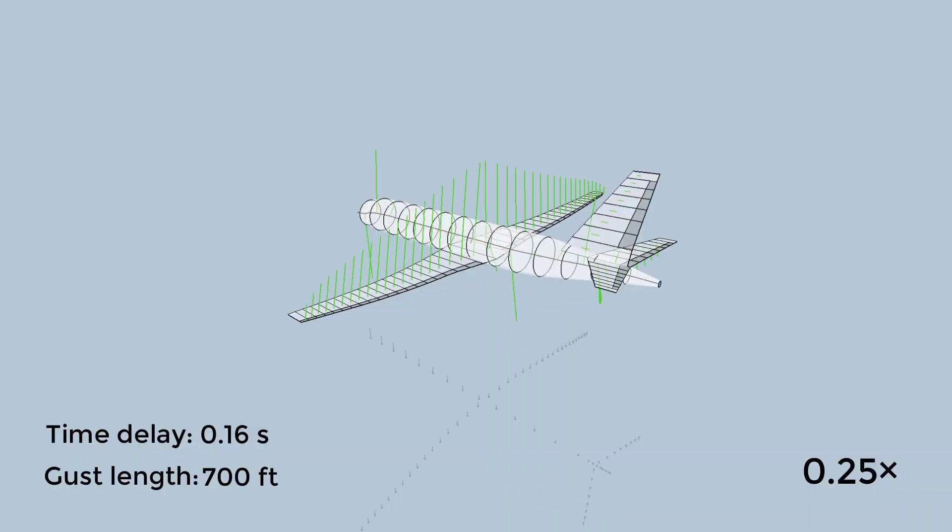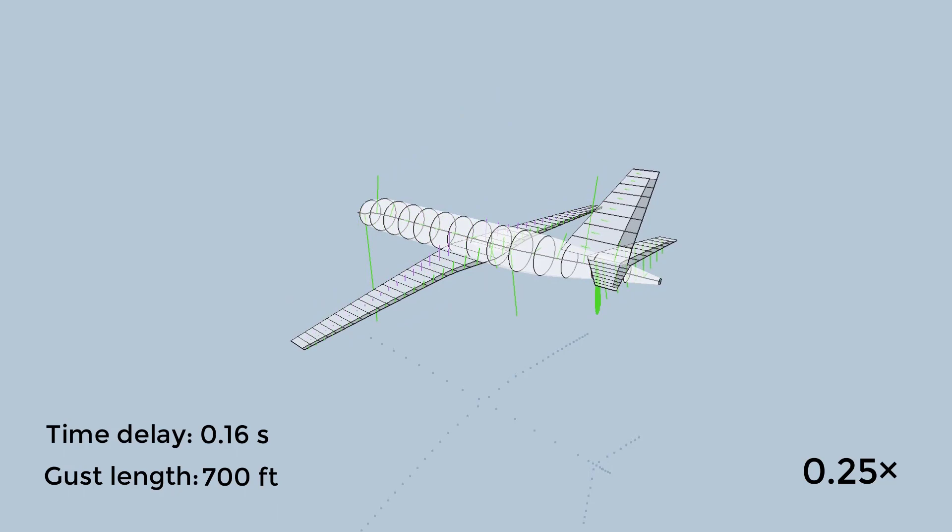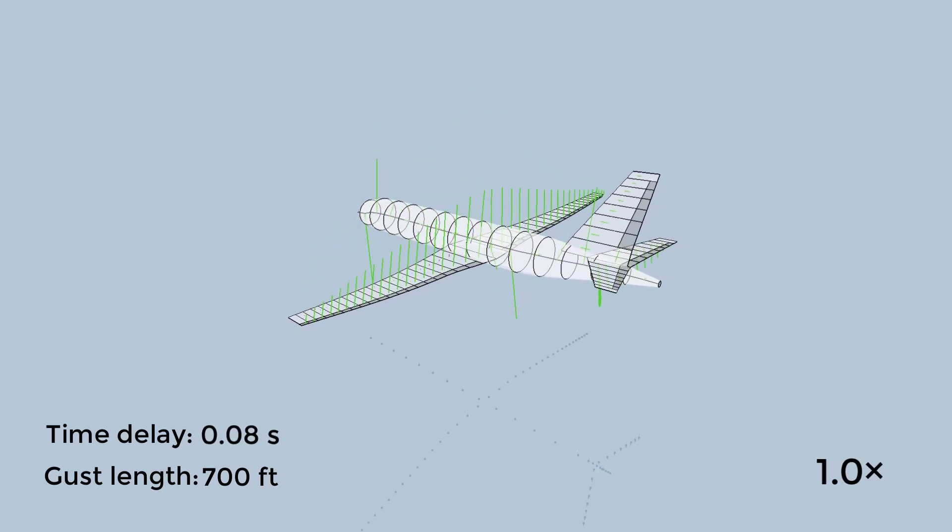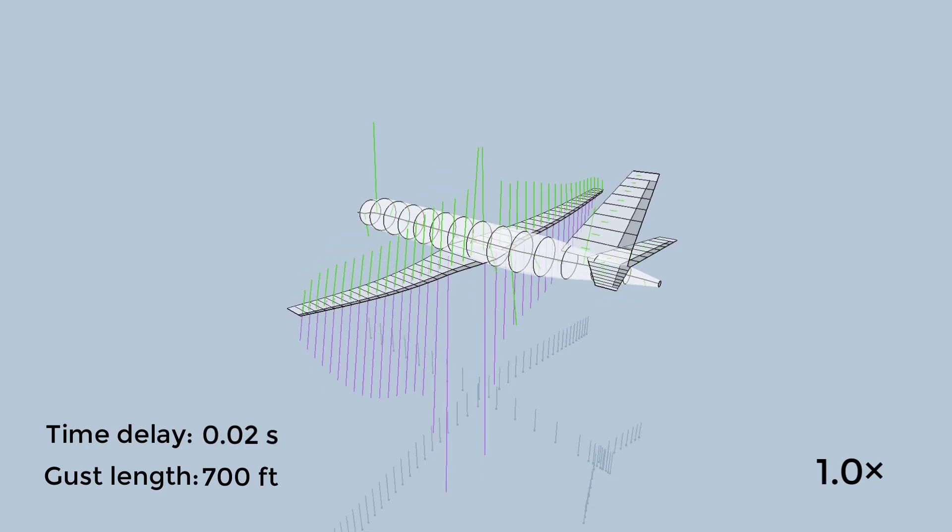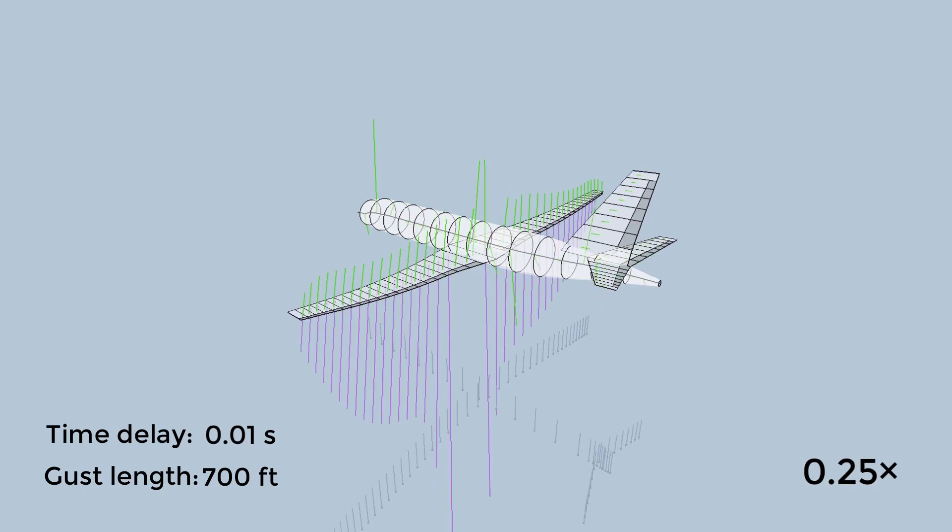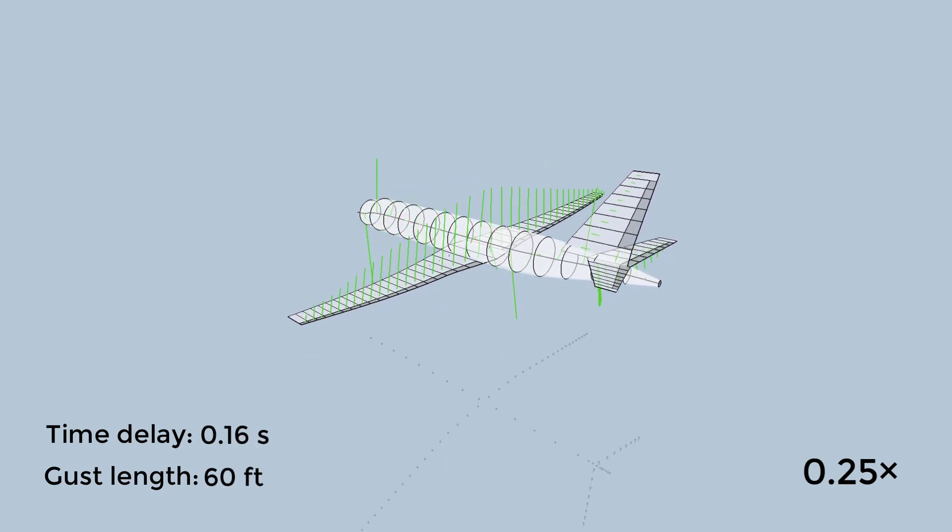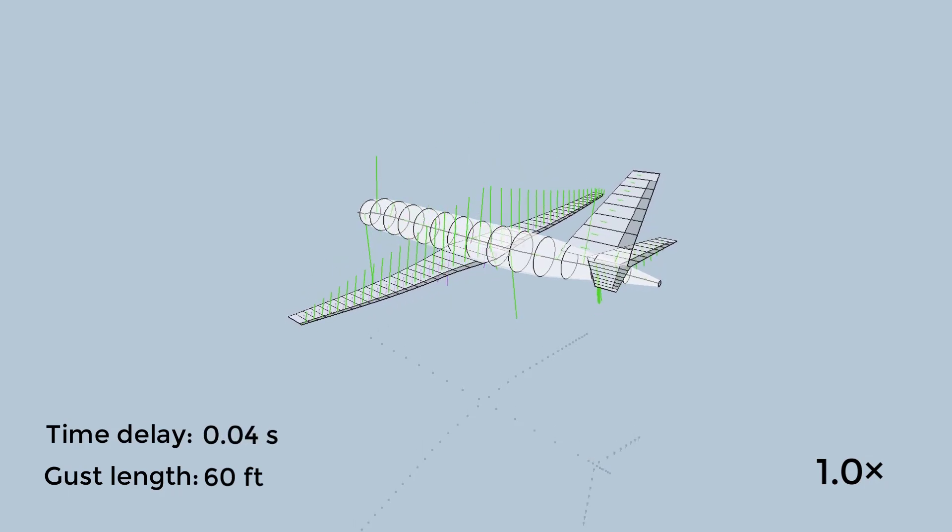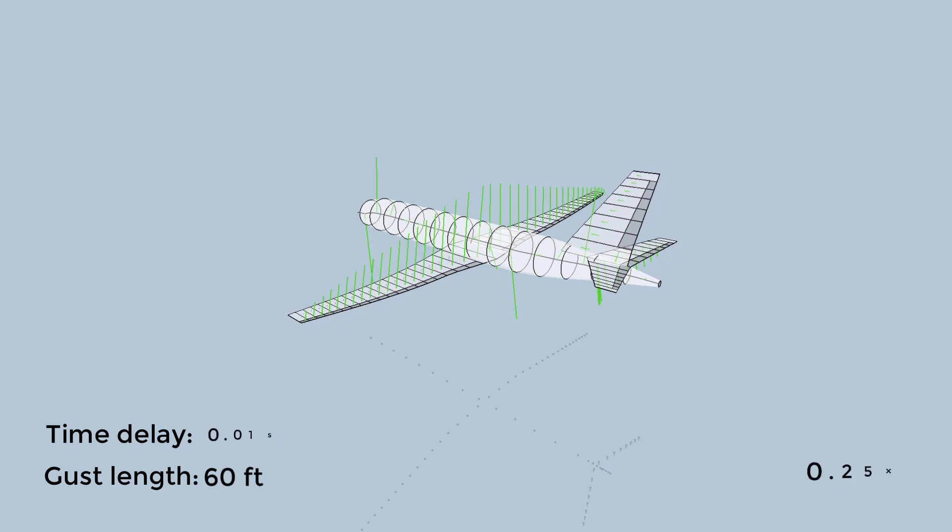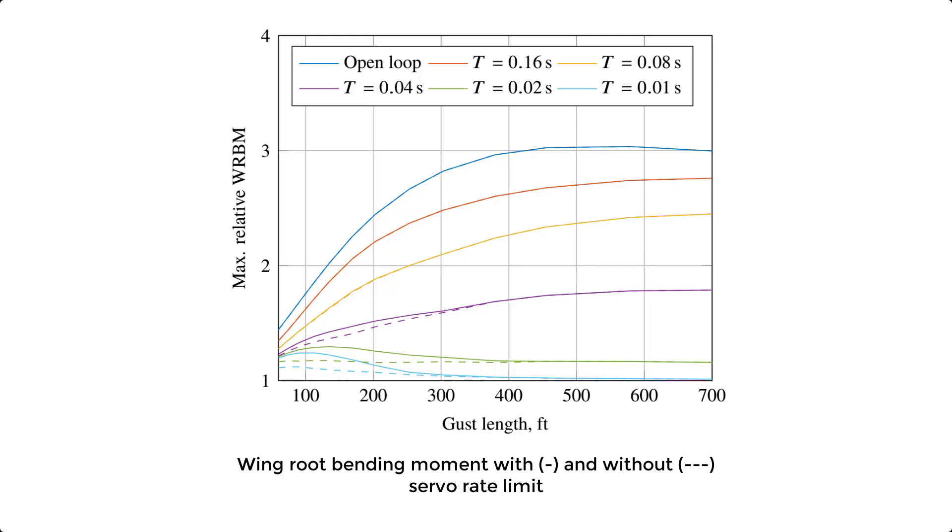The gust simulations with different time delays are now also performed for longer and shorter gusts. The relative wing root bending moment is now plotted as a function of gust length for different time delays. It can be seen that for large time delays the highest loads occur for the long gusts. For small time delays, the loads decrease and the load maximum moves to the short gusts.